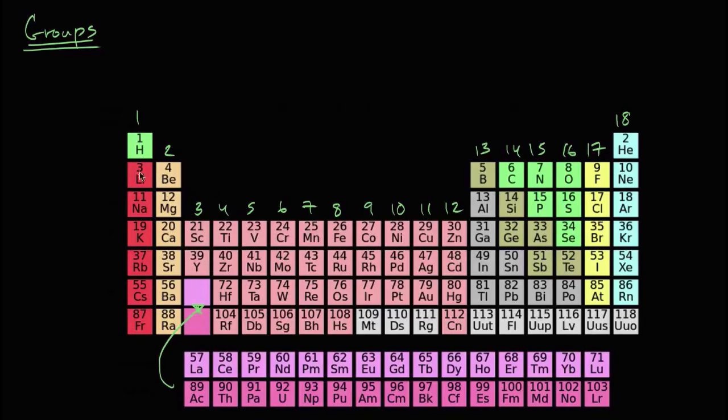But what's interesting, why do we go through the trouble about calling these columns a group? Well, this is what's interesting about the periodic table, is that all of the elements in a column, for the most part, and there's tons of exceptions, but for the most part, the elements in the column have very similar properties.